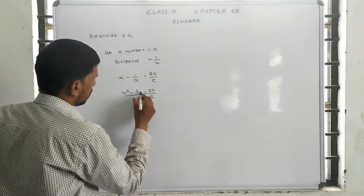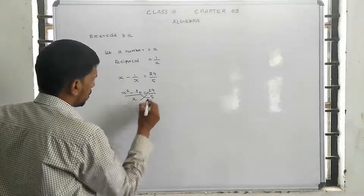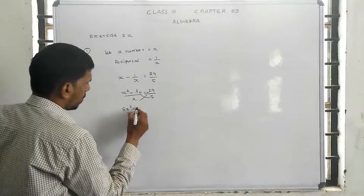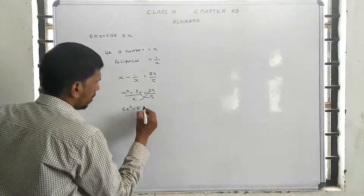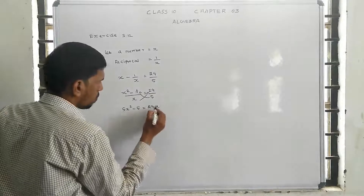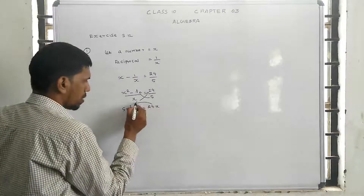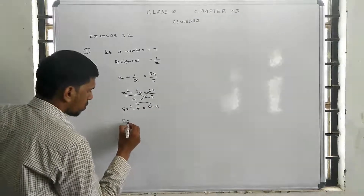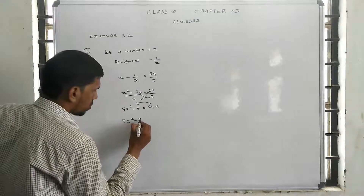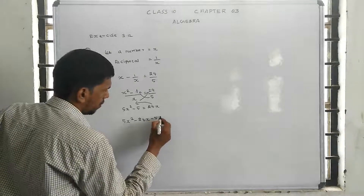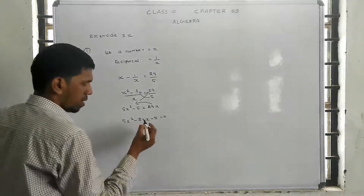So, simple cross multiplication. When 5 is multiplied: 5x squared minus 5 is equal to 24x. So, rearranging: 5x squared minus 24x minus 5 equals 0.